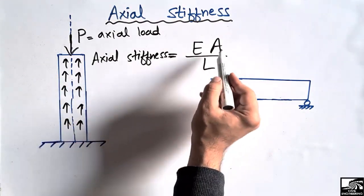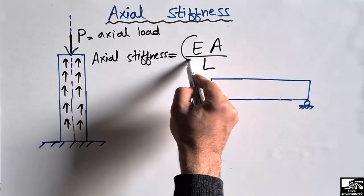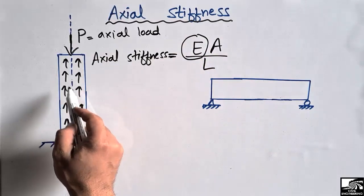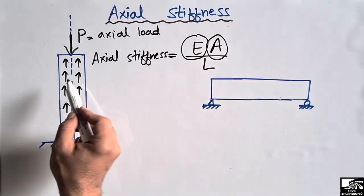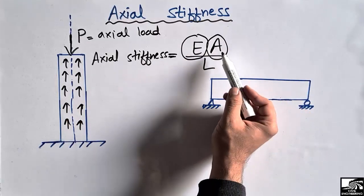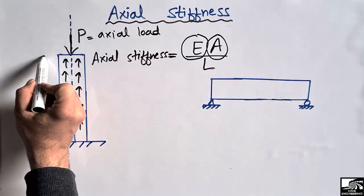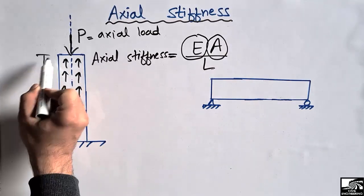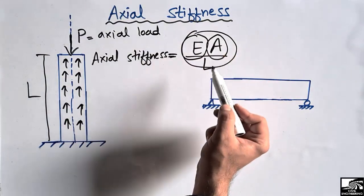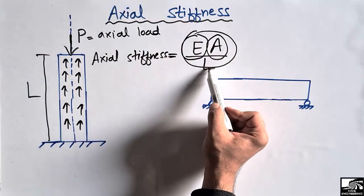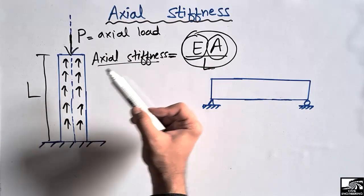The formula for axial stiffness is EA divided by L. This formula is used to find the axial stiffness for any column, where E represents the elasticity of the material used, A is the cross-sectional area of the column — which may be square or rectangular depending on the designer — and L is the length of the column.